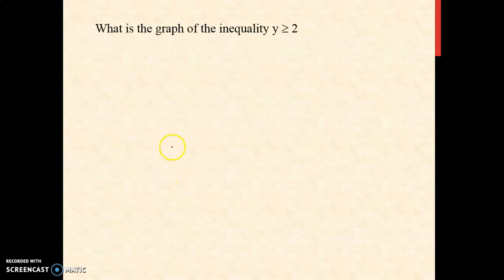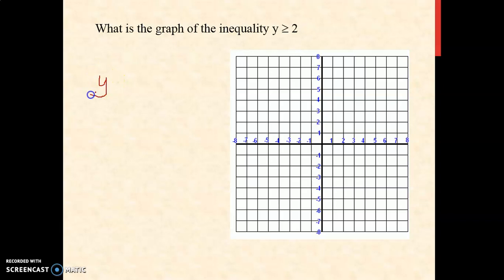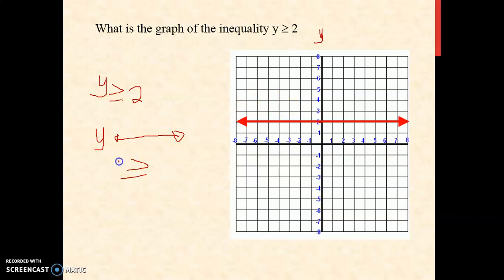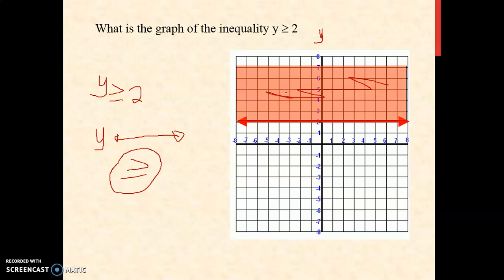Next: what is the graph of the inequality y is greater than or equal to 2? In this inequality, we only have one variable, and that is y. So if it is y, we're just going to concentrate on the y-axis. If it is y, your line is a horizontal line. We're going to locate 2 on the y-axis. Since we are using greater than or equal to, we're going to use a solid line. Since it is greater than or equal to, the solution is above the line. All the points here are the solutions of the given inequality.